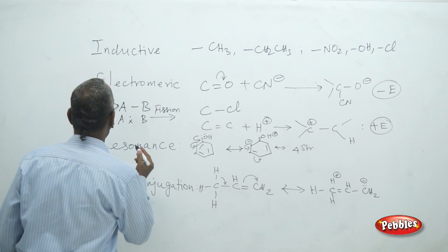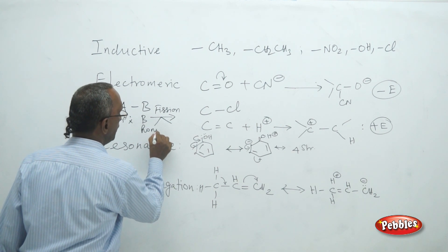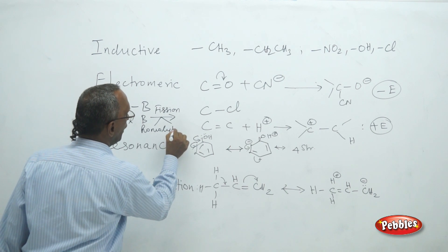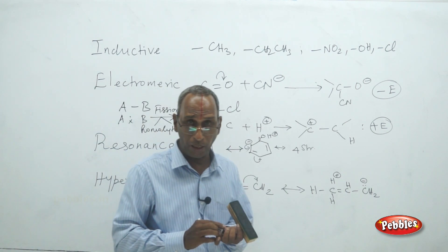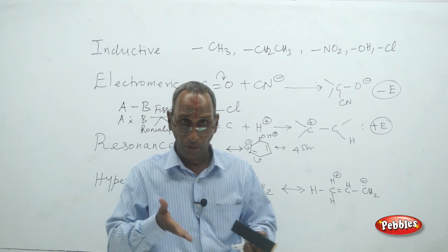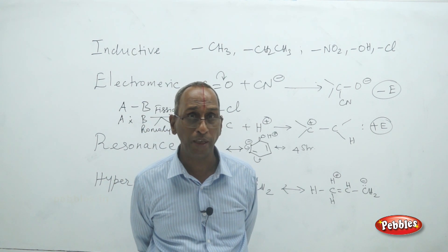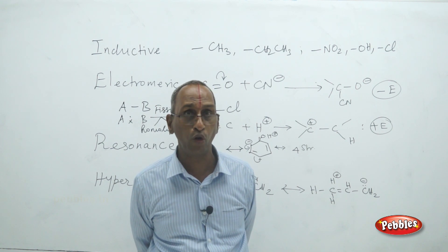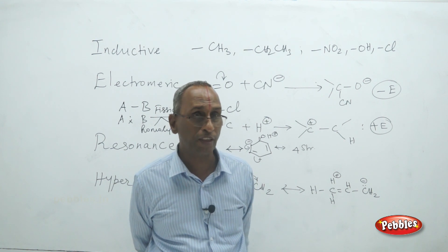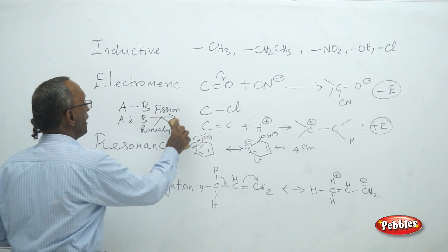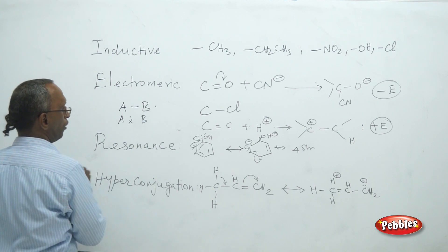Fission is of two types: homolytic fission and heterolytic fission. 'Lytic' means decomposition — decomposition taking place along with breakage of the covalent bond. 'Homo' means same, 'hetero' means different. In homolytic fission, after breakage, each atom goes with its own electron.